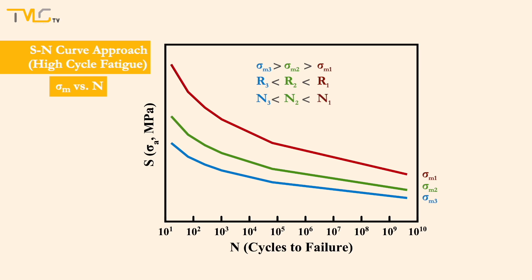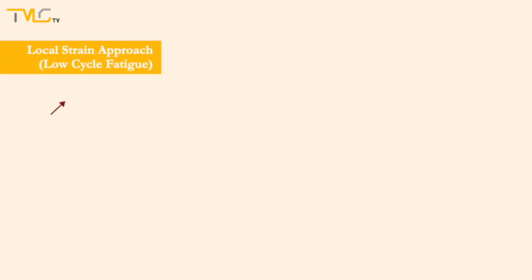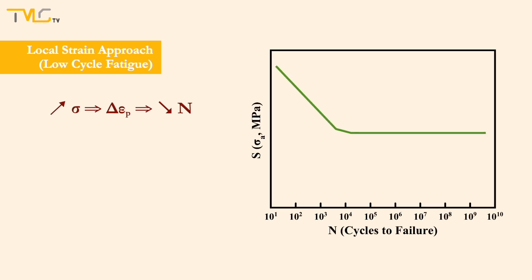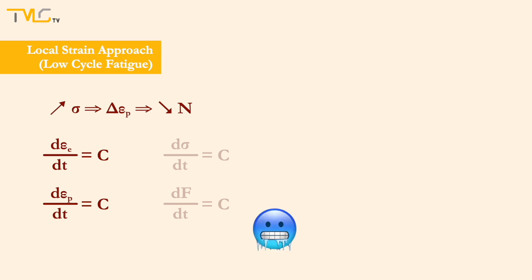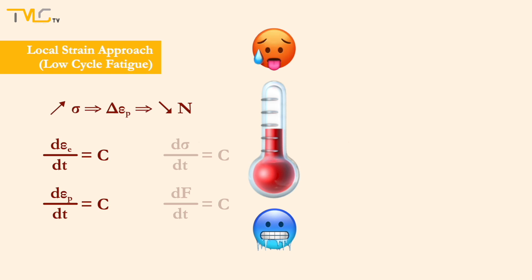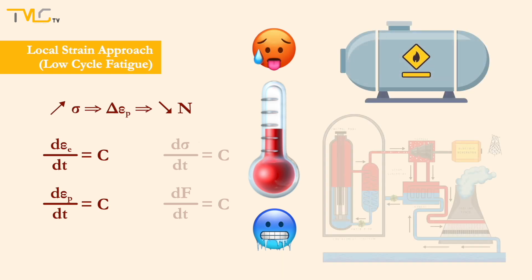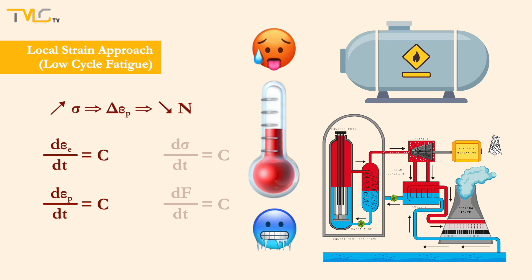With this said, we can move to the second fatigue life prediction method, which is the local strain approach. Increasing stress progressively decreases the fatigue life due to increasing plastic deformation. Thus, for low cycle fatigue regions, tests are performed under controlled cycles of elastic and plastic strain, rather than controlled load or stress cycles. Low cycle fatigue cases are usually considered for components experiencing thermal cycling, such as pressure vessels and steam turbines. Thus, cyclic strain is employed for monitoring fatigue rather than cyclic stress.